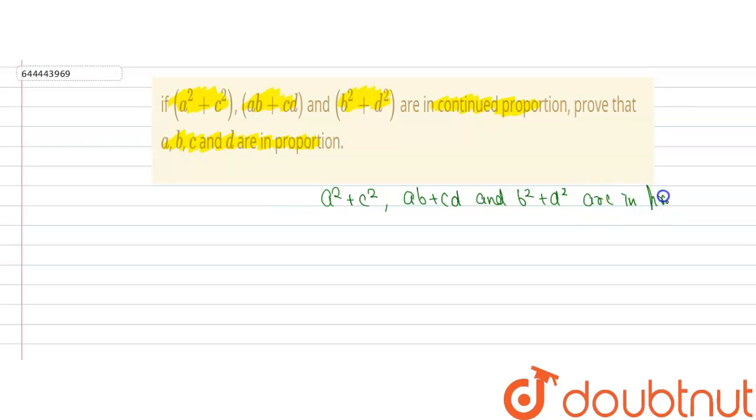Are in proportion. So we can write it as a² plus c² divided by ab plus cd is equal to ab plus cd divided by b² plus d².